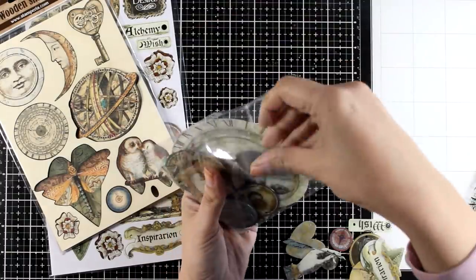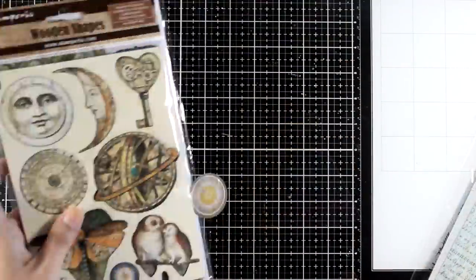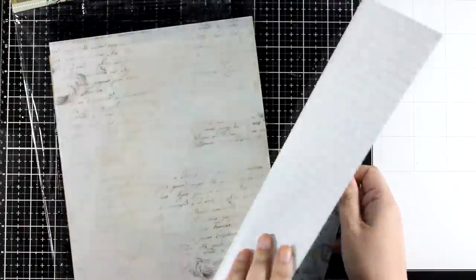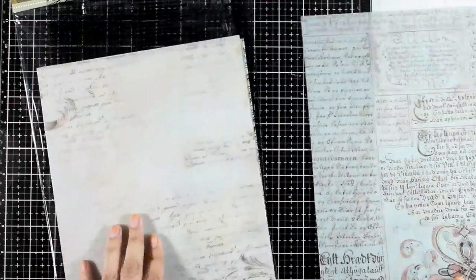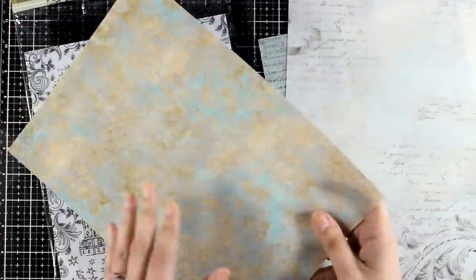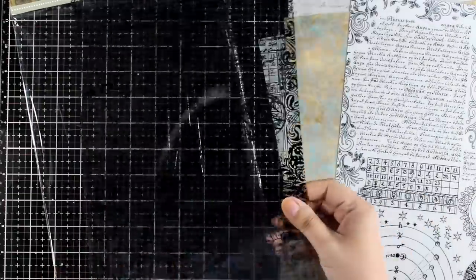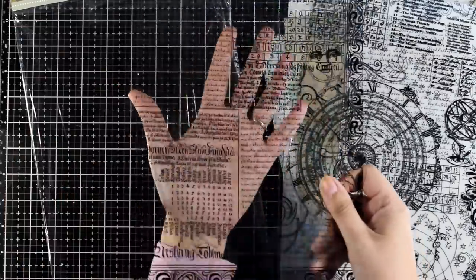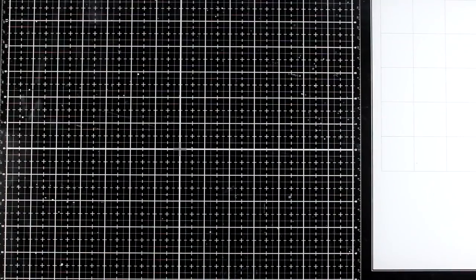You see there are also wooden shapes as well as chipboard shapes that you can just pop out and stick on your projects. Another fun product that Stamperia has in most of their collections are their clear prints. This is printed acetate, quite thick. Some are semi-transparent while others are completely transparent. These are perfect for creating covers if you're making your own art journals or albums. For my project today I'll be working mainly with the paper pad.